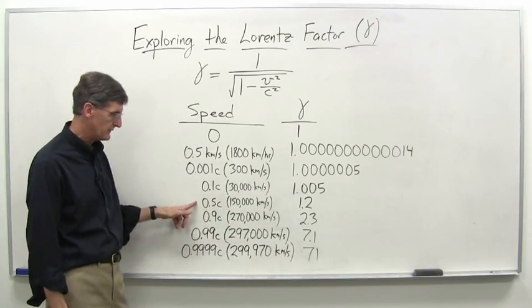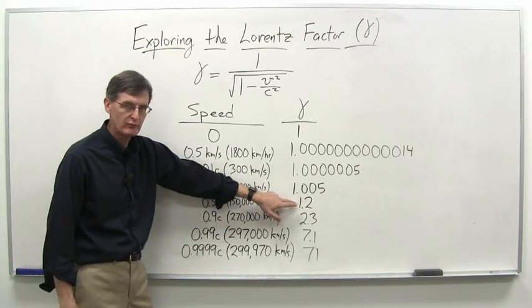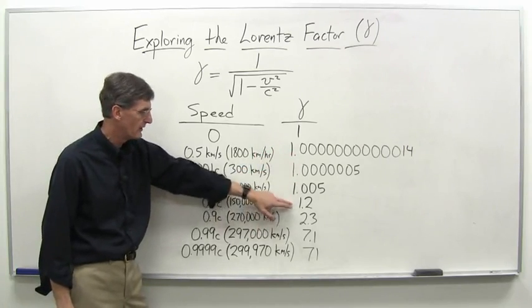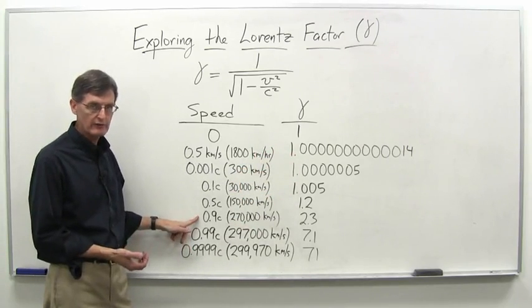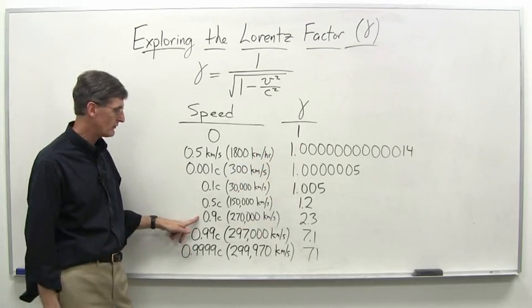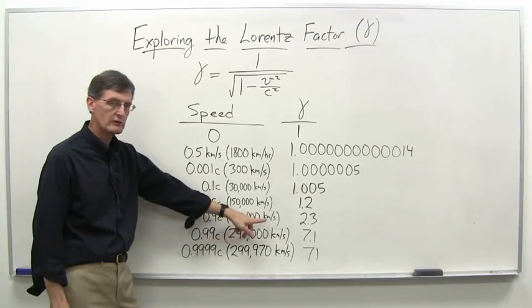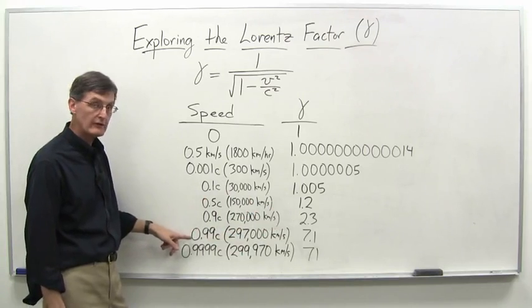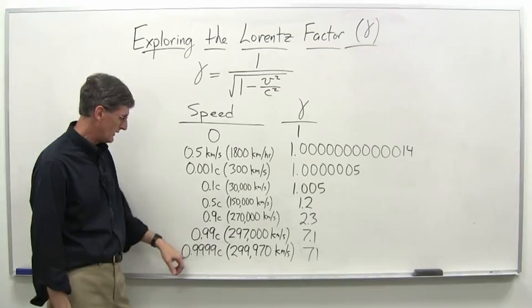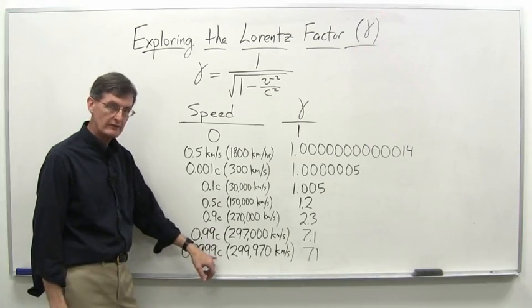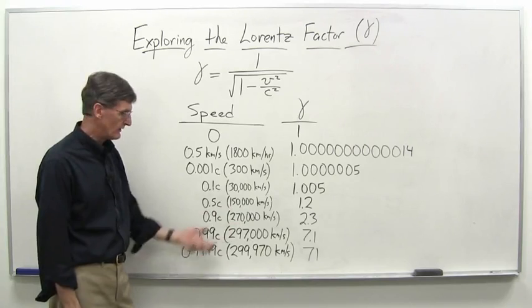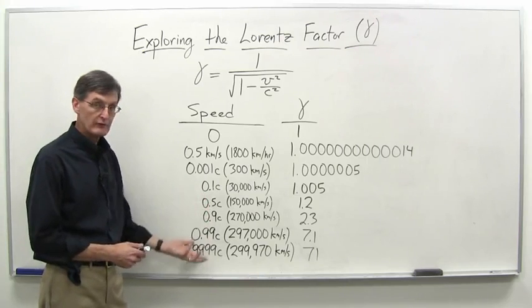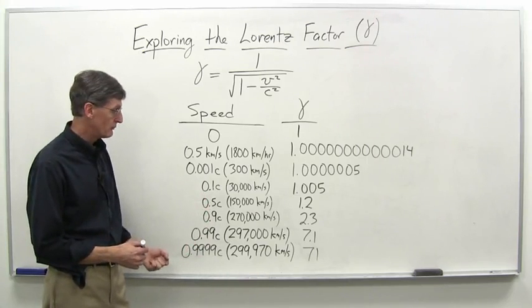And then as it goes up, half the speed of light. Now we're getting someplace where we could see some effects, certainly. Not that you couldn't see it before, but they're pretty small. 1.2 there. Nine-tenths the speed of light, an object moving at nine-tenths the speed of light, 270,000 kilometers per second, roughly, 2.3 for the gamma. Then 0.99c, 99% of the speed of light, 7.1. And then 0.9999c, 71. So it does go up fairly rapidly as you get to speeds very close to the speed of light.